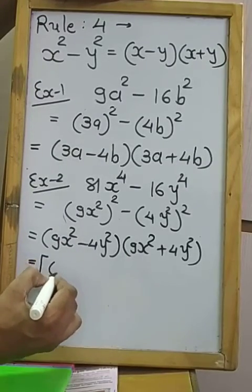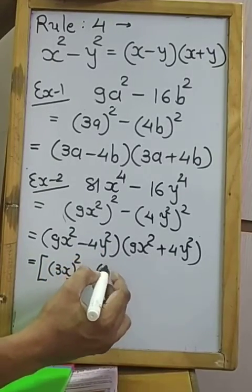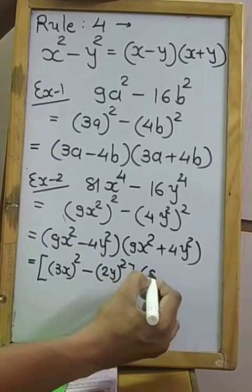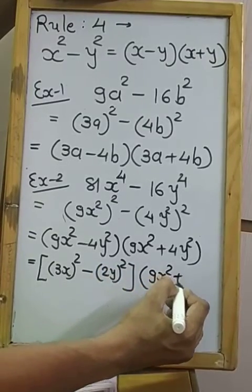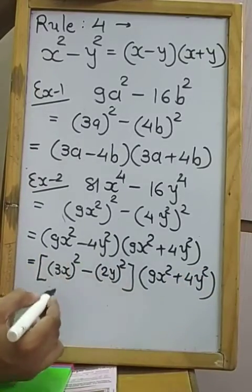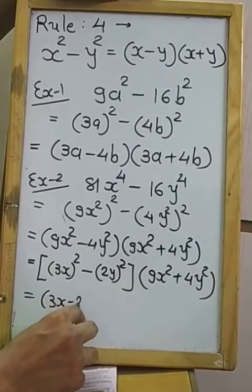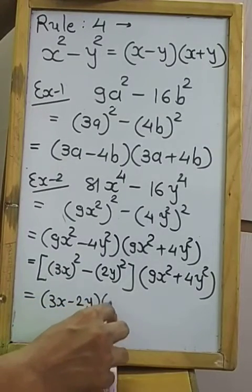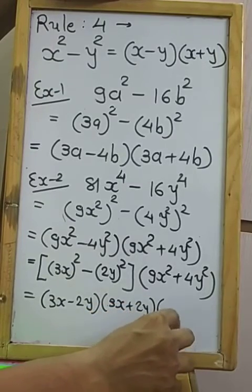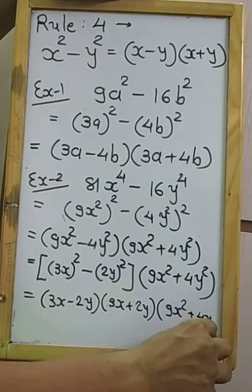9x² can be written as (3x)² and 4y² as (2y)², so the first bracket becomes (3x − 2y)(3x + 2y). The second bracket (9x² + 4y²) remains as is. So the final answer is (3x − 2y)(3x + 2y)(9x² + 4y²).